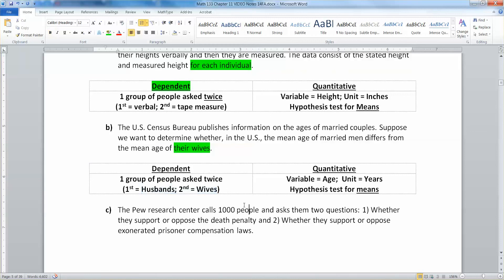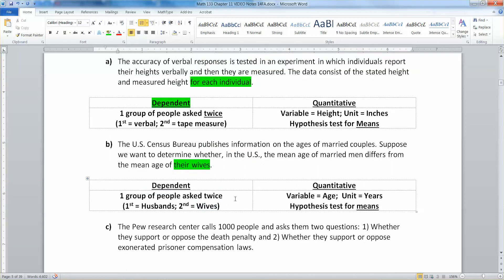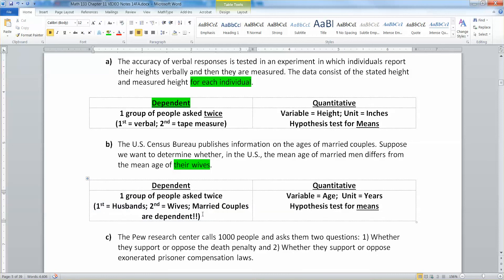That'd be different if they asked 50 random husbands and 50 random wives that are not their wives. Well, that's totally different. But we're actually talking about married couples. Married couples are dependent. There, I just tossed that in. Married couples are dependent. Don't forget. So now your variable is age, and the unit in this case would be years. You measure your age in years. And that'd be, again, a hypothesis test for the means because this is a quantitative variable.